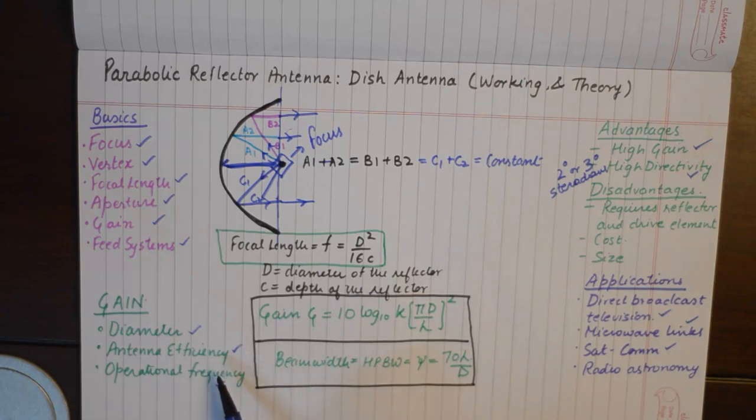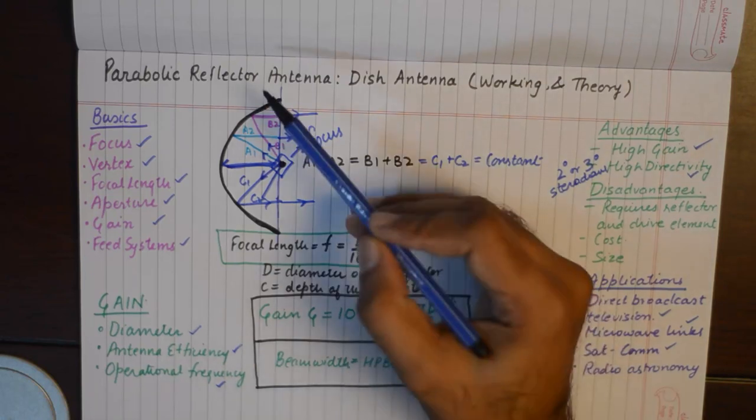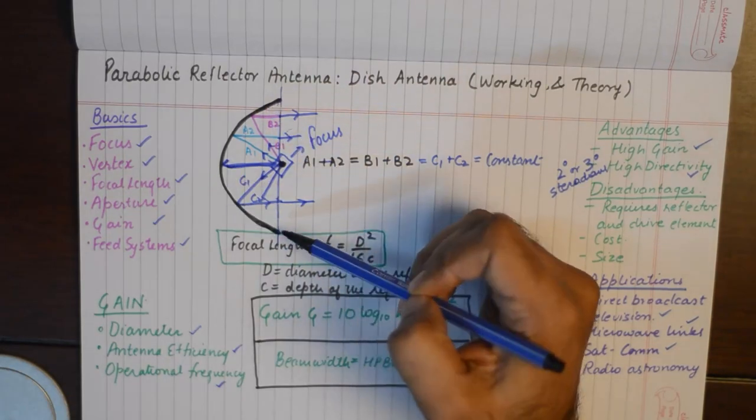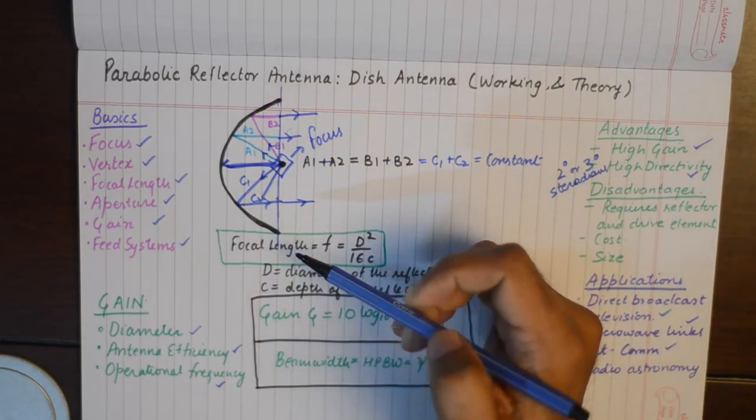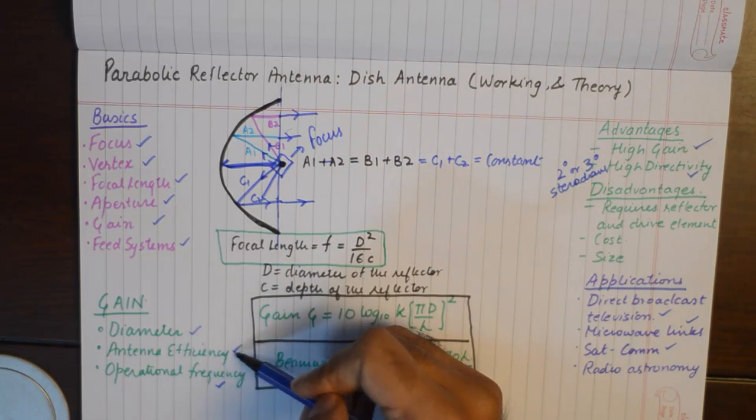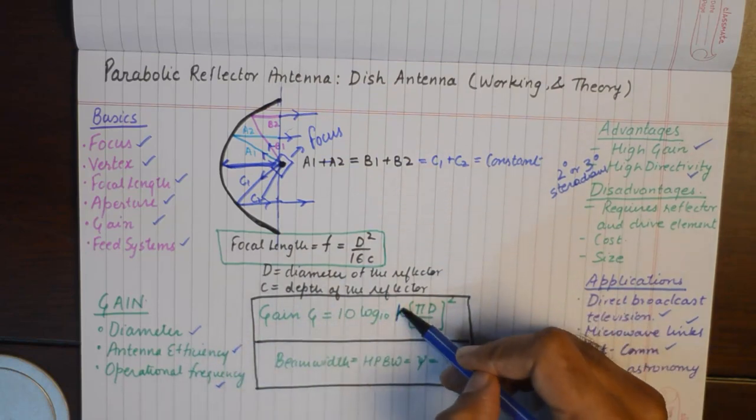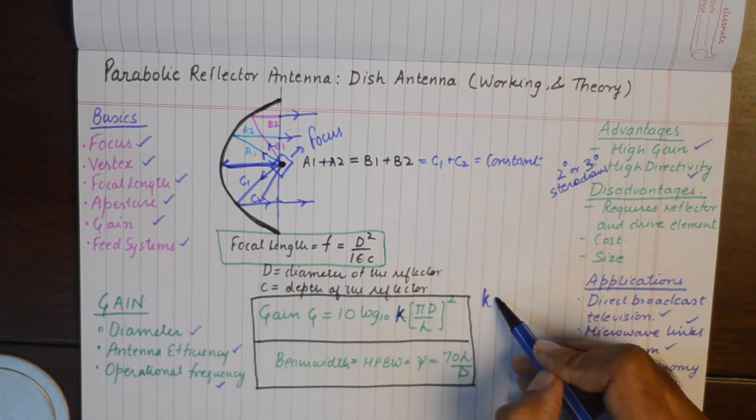Antenna efficiency is one parameter that depends upon the quality of the dish. The material, the coating of this dish antenna is going to determine the antenna efficiency which is represented by K.